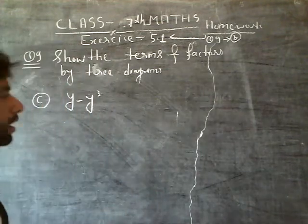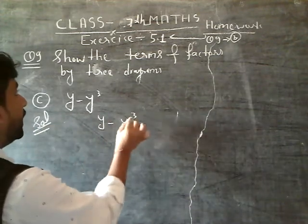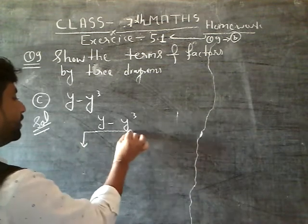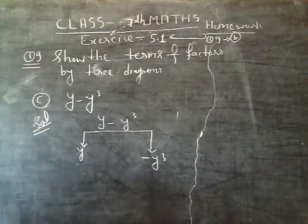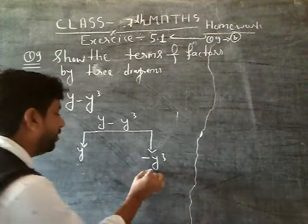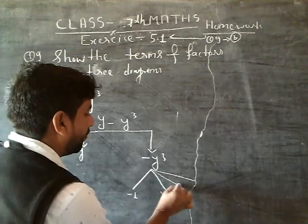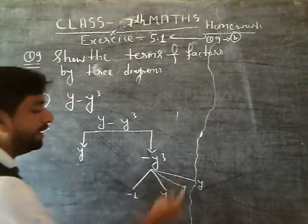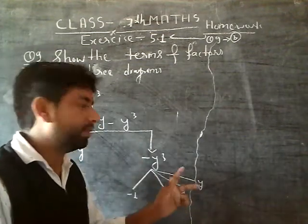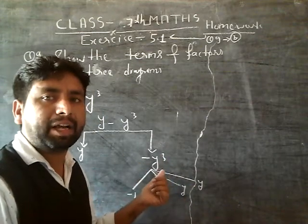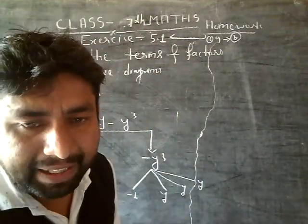Y minus Y cube. When we solve this, Y minus Y cube. You can see this is Y and this is minus Y cube. Y has no factors, it's just Y. Minus Y cube factors will be minus 1 and then Y, and 3 times because it's cube, so Y into Y into Y. Minus 1. How many terms? Degree of algebraic expression is cube, so 3 times Y into Y into Y. Clear, very good.